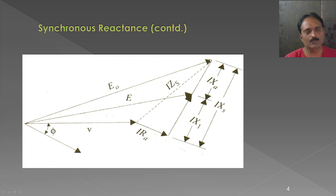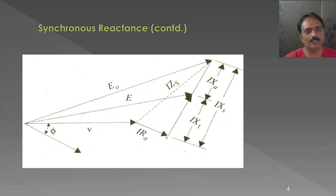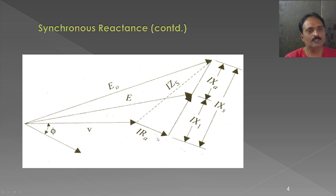One more intermediate parameter we get when the alternator is loaded: the on-load induced EMF is the vector addition of V, I×RA, and I×XL. Under no-load condition, E0 will be a little bit more than this on-load induced EMF by a value of I×XA. This is the general phasor diagram that we consider to represent all the parameters of an alternator.